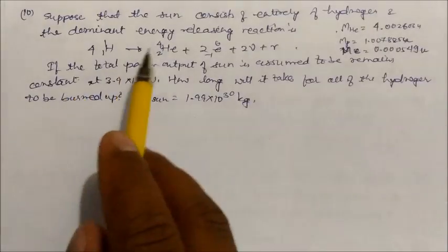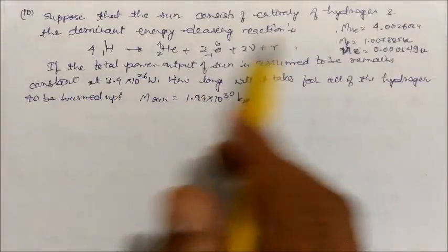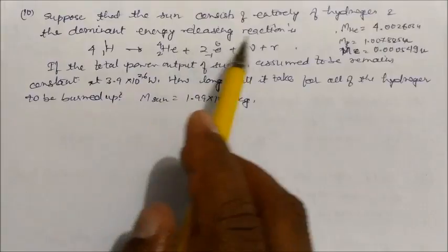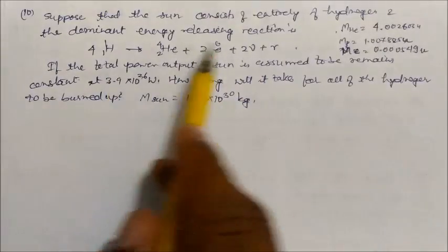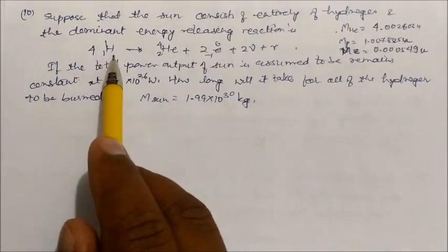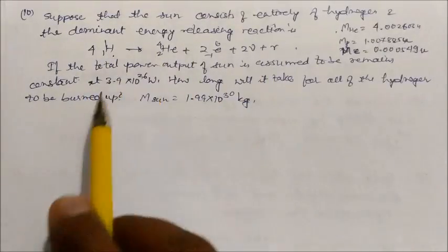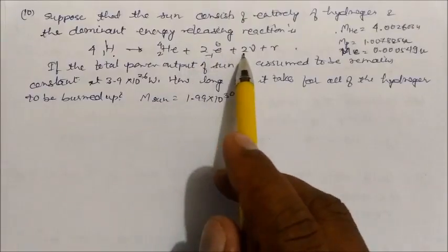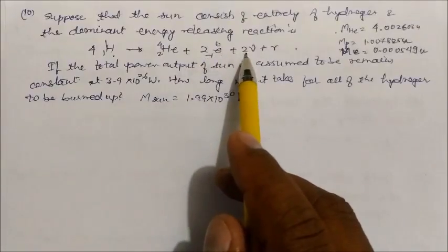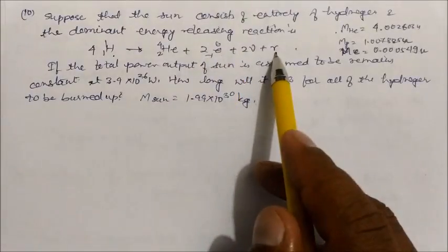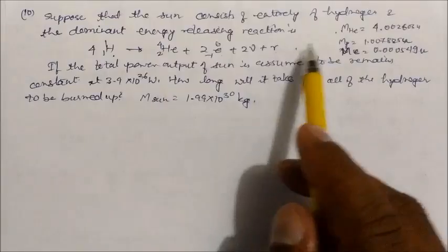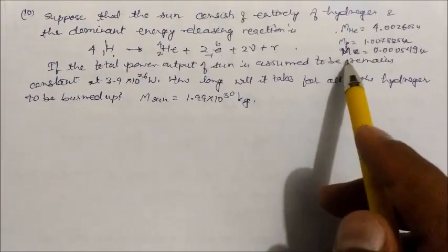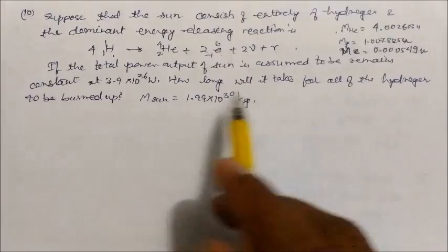Suppose the sun consists entirely of hydrogen, and the dominant energy-releasing reaction is: 4 hydrogen atoms convert to one helium atom, releasing 2 beta particles, 2 anti-neutrinos, and gamma radiation. The mass of helium, the mass of the proton, and the mass of the electron are all given.